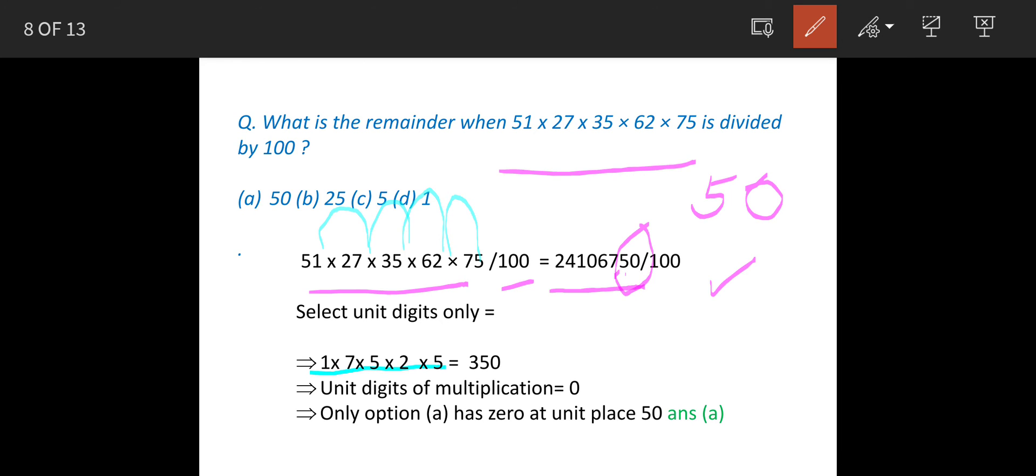We pick up these digits: 1, 7, 5, 2, and then 5. When we multiply these numbers, we get 350.